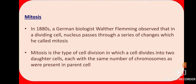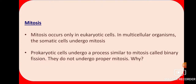Mitosis was described by a German biologist, Walther Flemming, when he observed that a dividing cell undergoes a series of changes in its nucleus — the central portion that controls the whole cell. Changes occur in the nuclear material inside the nucleus, and due to these nuclear changes, the cell divides. This process is called mitosis. Mitosis occurs only in eukaryotic cells.